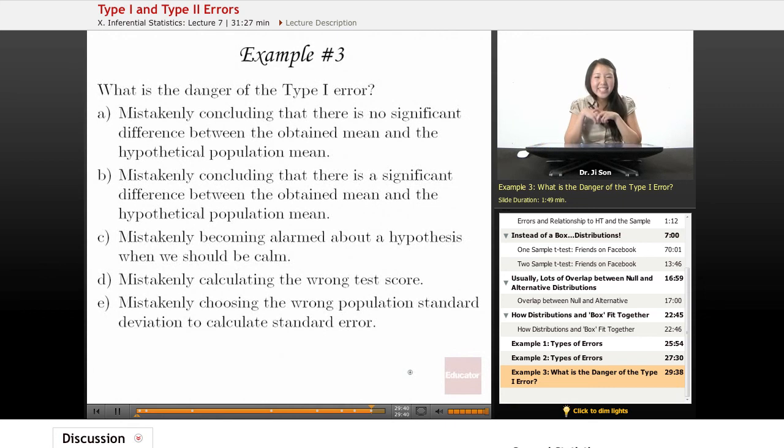Example three, what is the danger of the type 1 error? So this is a more conceptual question. The danger is mistakenly concluding that there is no significant difference between the obtained mean and the hypothetical population mean.